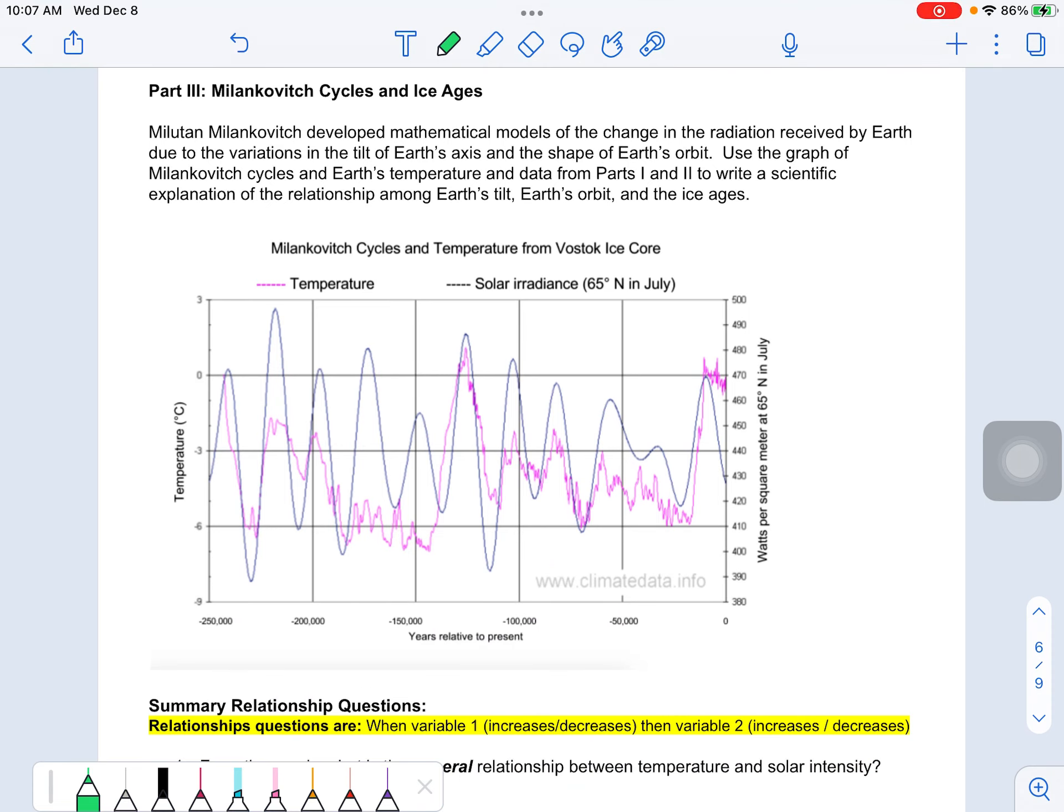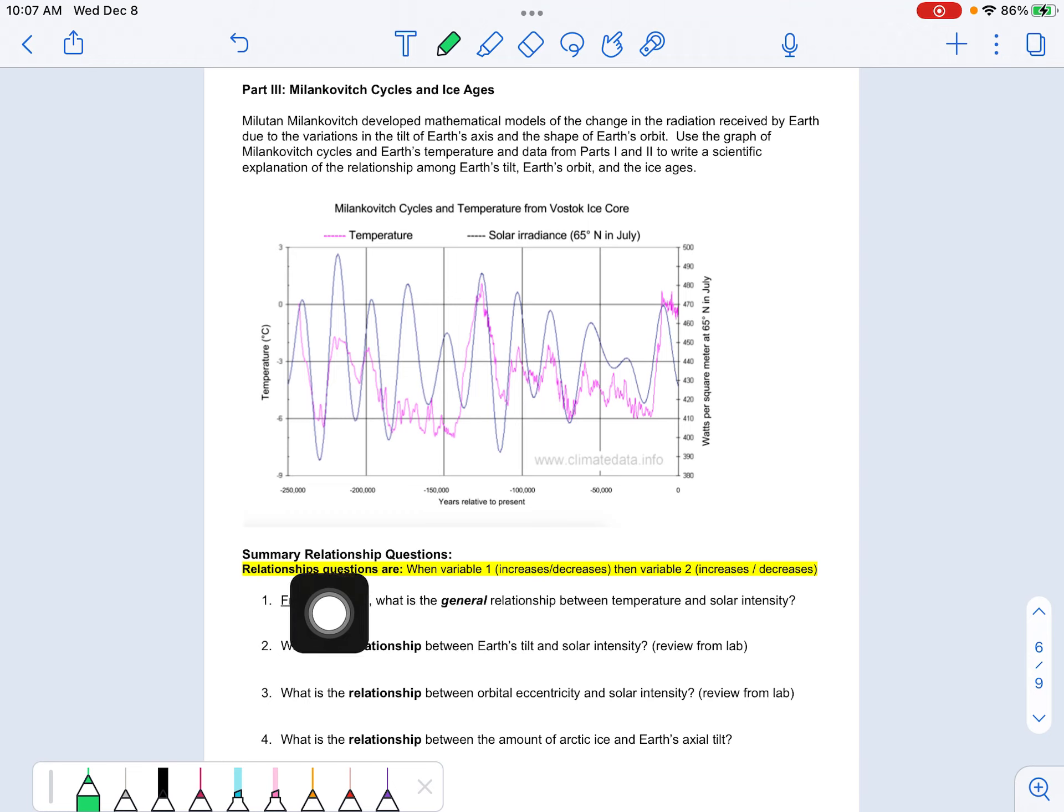So this first section, you're doing a lot of relationship statements, okay? And when one changes, how does that impact the other? So you can use this outline as you go. So looking at the graph, relationship between temperature, which is the pink line, and solar intensity or irradiance. That's the blue, purple line. So when, and you get to decide when temperature either increases, what do we notice about solar intensity? When it decreases, what do we notice? So you pick one, same thing here.